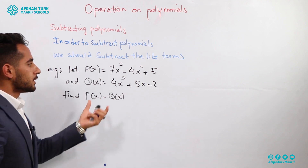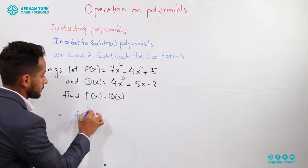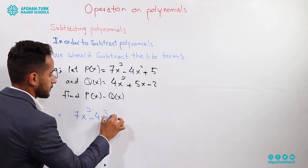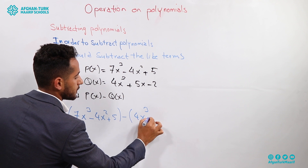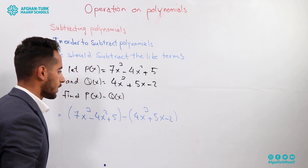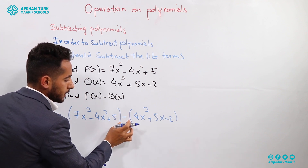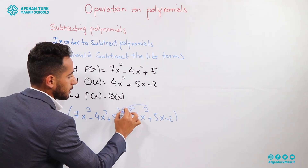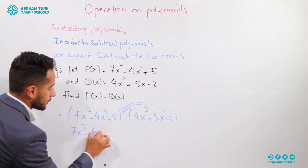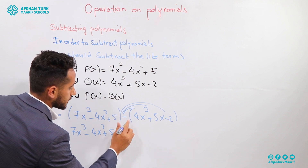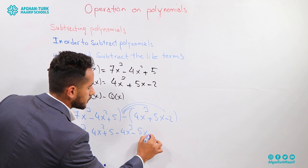First of all, we have to write the first polynomial itself: 7x to the power of 3 minus 4x squared plus 5. Then the second polynomial: minus 4x to the power of 3 plus 5x minus 2. In subtraction of two polynomials, we have to multiply the subtract sign with each term of the second polynomial. So we get: 7x³ minus 4x² plus 5, then minus times plus gives minus 4x³, minus times plus gives minus 5x, and minus times minus gives plus 2.